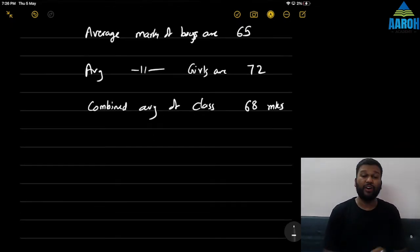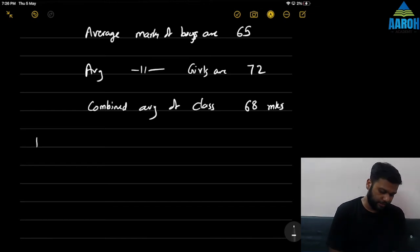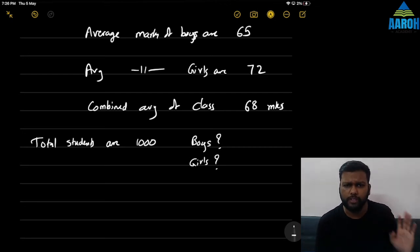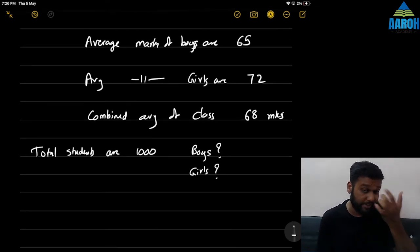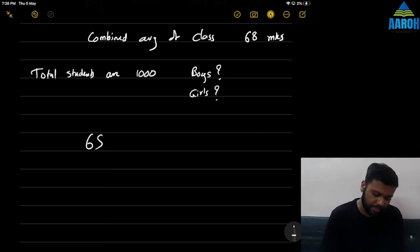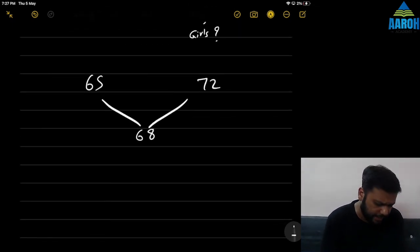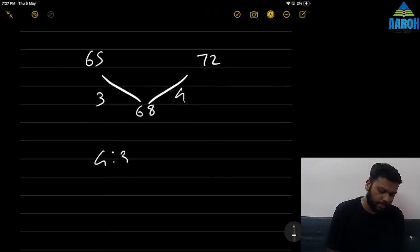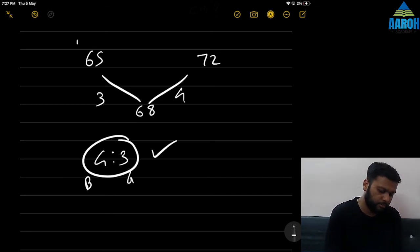Combined average is 68. What they ask is: if total students are 1000, how many boys and how many girls are there? Same concept: boys average 65, girls average 72, combined average 68. Difference between 65 and 68 is 3; difference between 68 and 72 is 4. Reverse it: 4 is to 3 is the ratio of boys to girls.